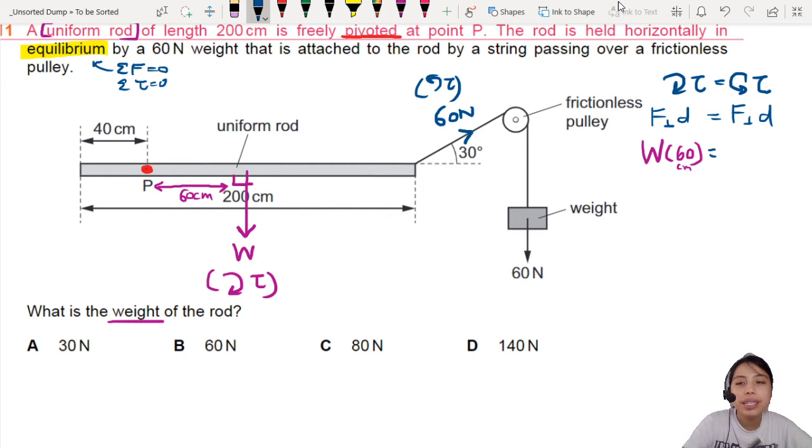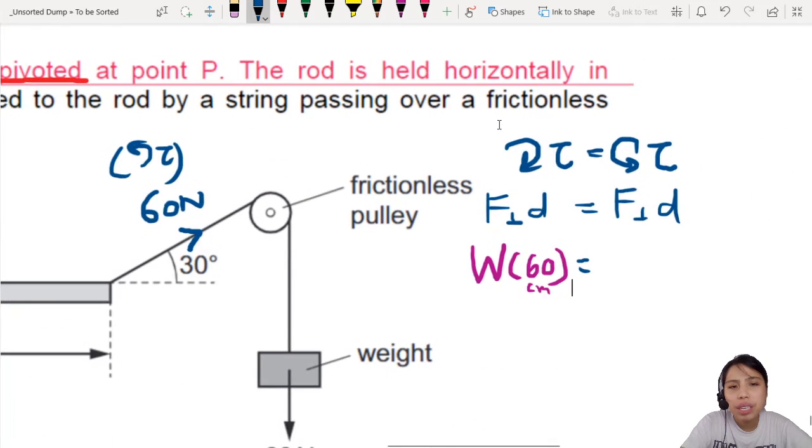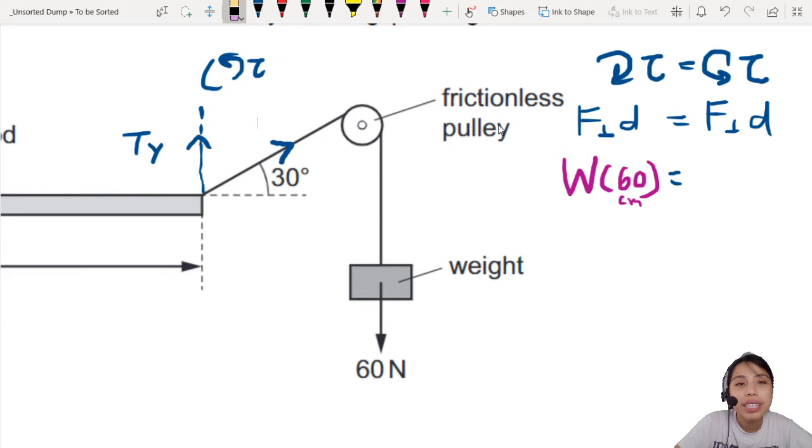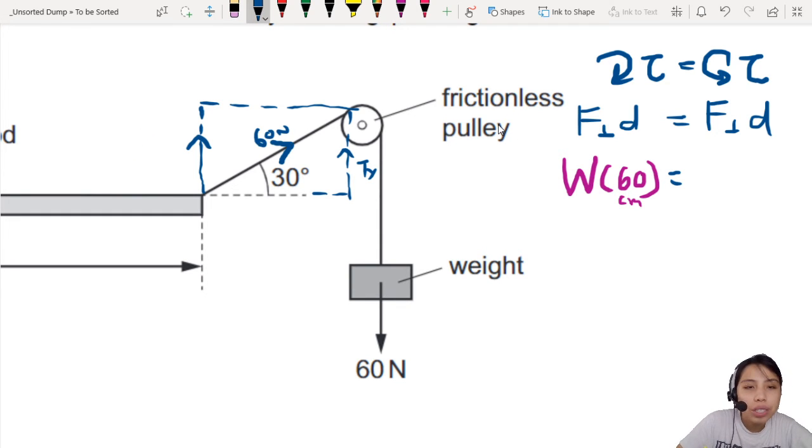And the other side. What is the perpendicular force? Now, we have a problem here. Because this tension is not exactly perpendicular. It's at an angle. So, you need to find what is this perpendicular component of the force. What is this? T-Y. How do you find T-Y? Well, let's draw some triangles. So, it's a horizontal component. It's a vertical component. T-Y pointing up. So, this vertical component is actually. If I draw this angle here. That will be opposite hypotenuse. So, 60 sin 30. That is the perpendicular force. Perpendicular to the rod.